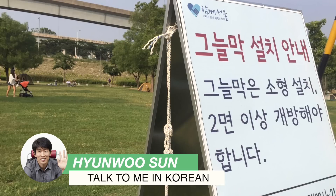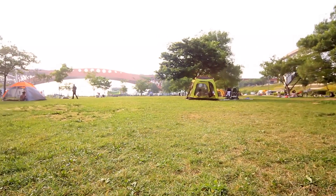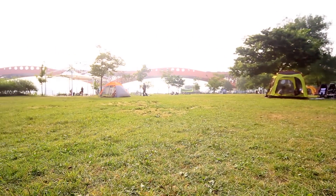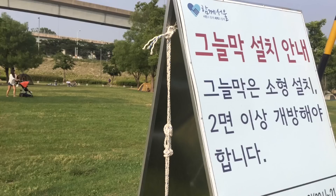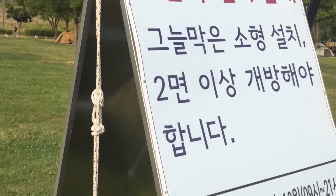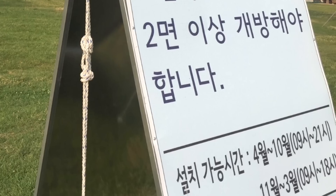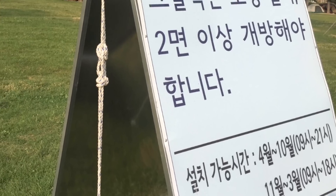This photo was taken at a park by Han River. During the summer, or once the weather becomes mild again after winter, you can see a lot of people installing small portable tents and hanging out at the park. In fact, on the weekend you can see literally hundreds of tents within the area shown in this photo. The message here is talking about some rules you need to keep in mind when you want to install a tent in the park. So let's start reading, shall we?